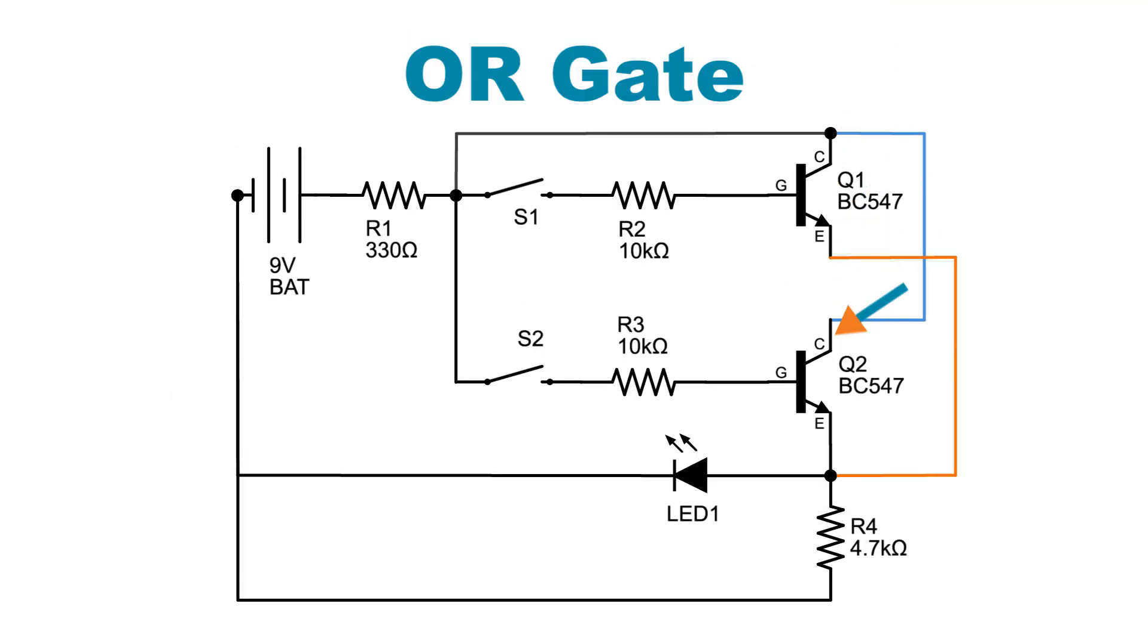Since the collectors are connected, and the emitters are connected, both transistors are connected to power and simply require a signal at either base to allow current to flow through the emitter, then the LED and ground.